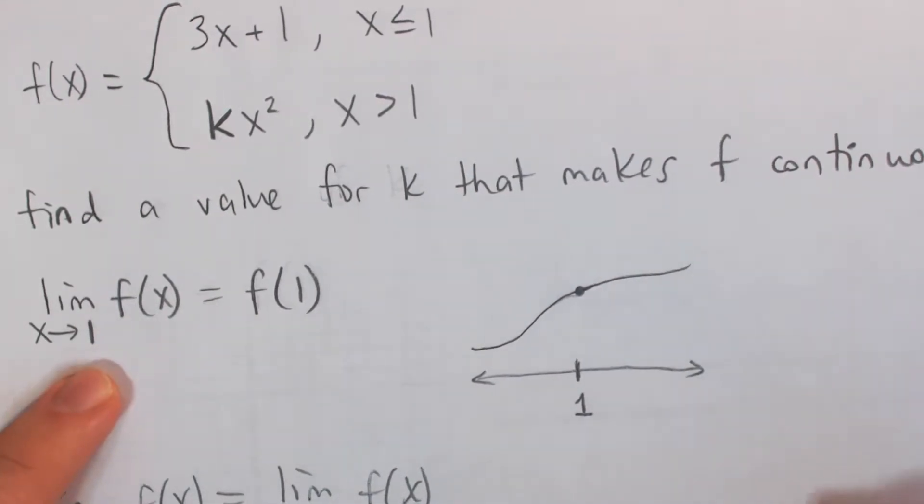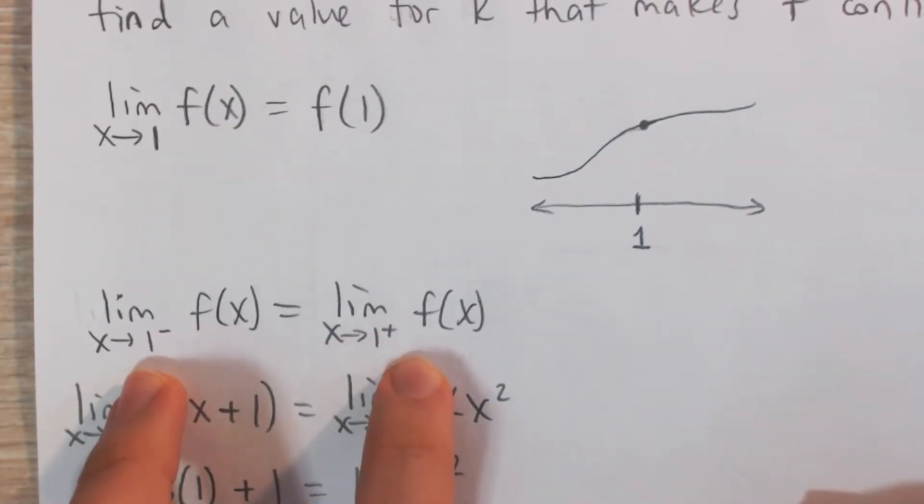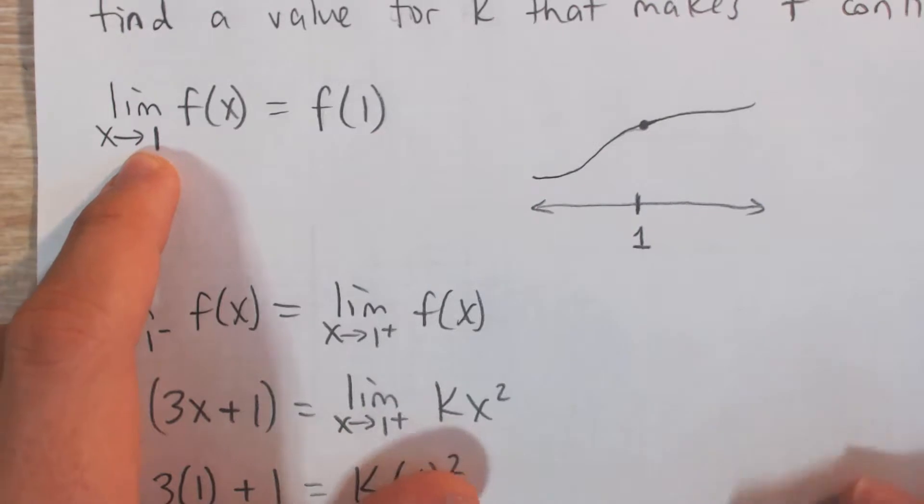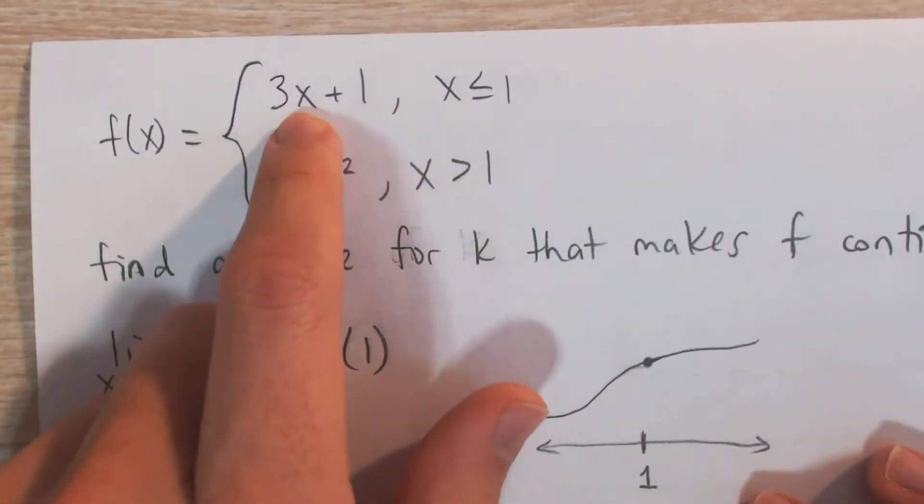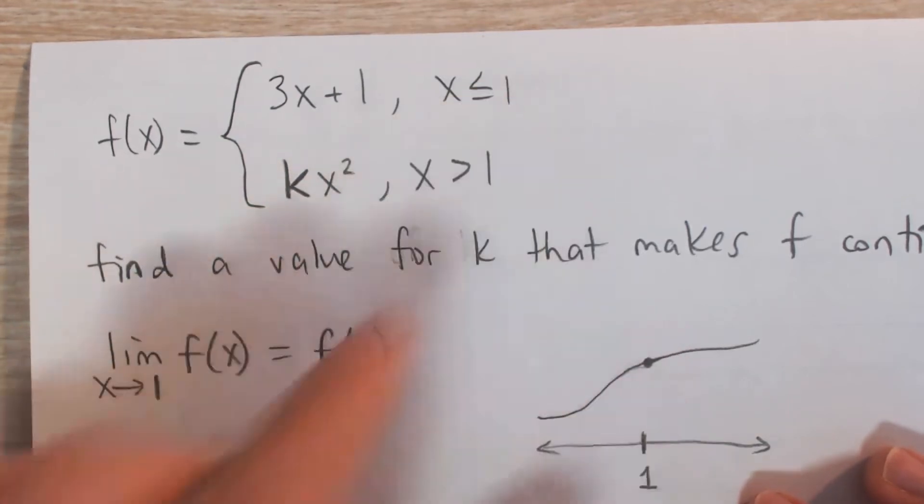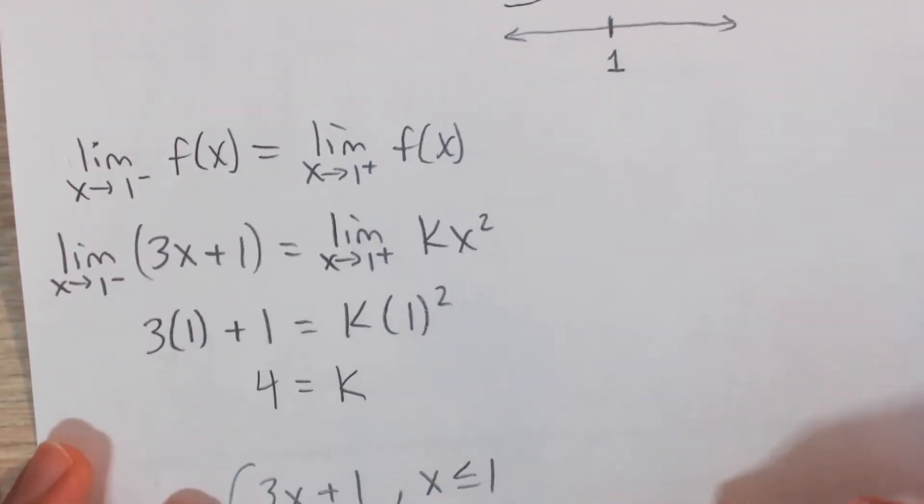And so what we need to do is find a value of k that would make these one side limits equal, because if the one side limits are equal, then the limit exists. And f of 1, we know f of 1 is just plugging in 1 into the function, and it's defined for all numbers, so we can do that. So here we go.